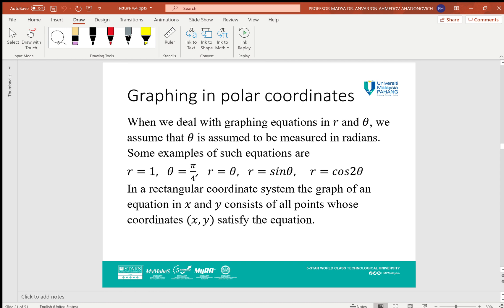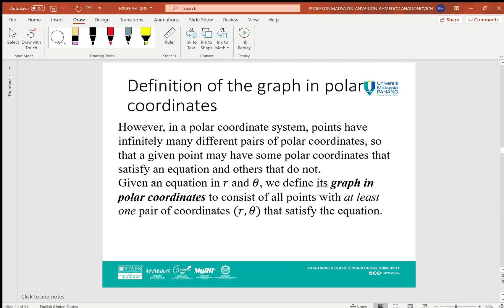In a rectangular coordinate system, the graph of an equation in x and y consists of all points whose coordinates (x,y) satisfy the equation. But in polar coordinates, points have infinitely many different pairs of coordinates, so a given point may have some polar coordinates that satisfy an equation and others that don't. Given an equation in r and θ, we define its graph to consist of all points with at least one pair of coordinates (r,θ) that satisfy the equation.